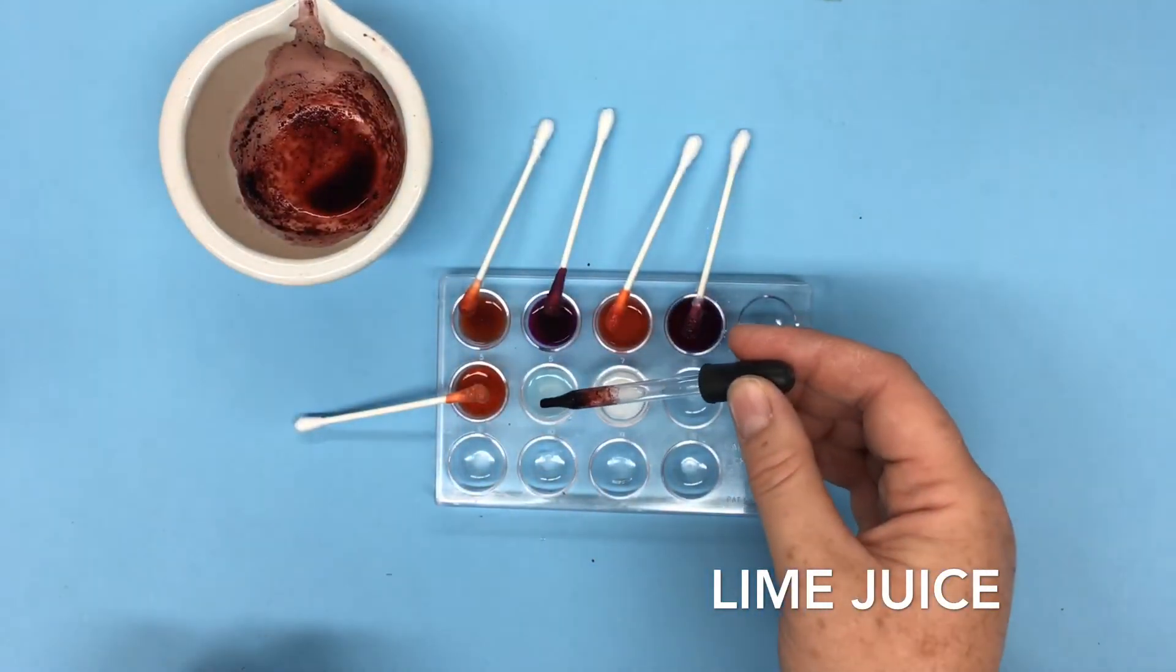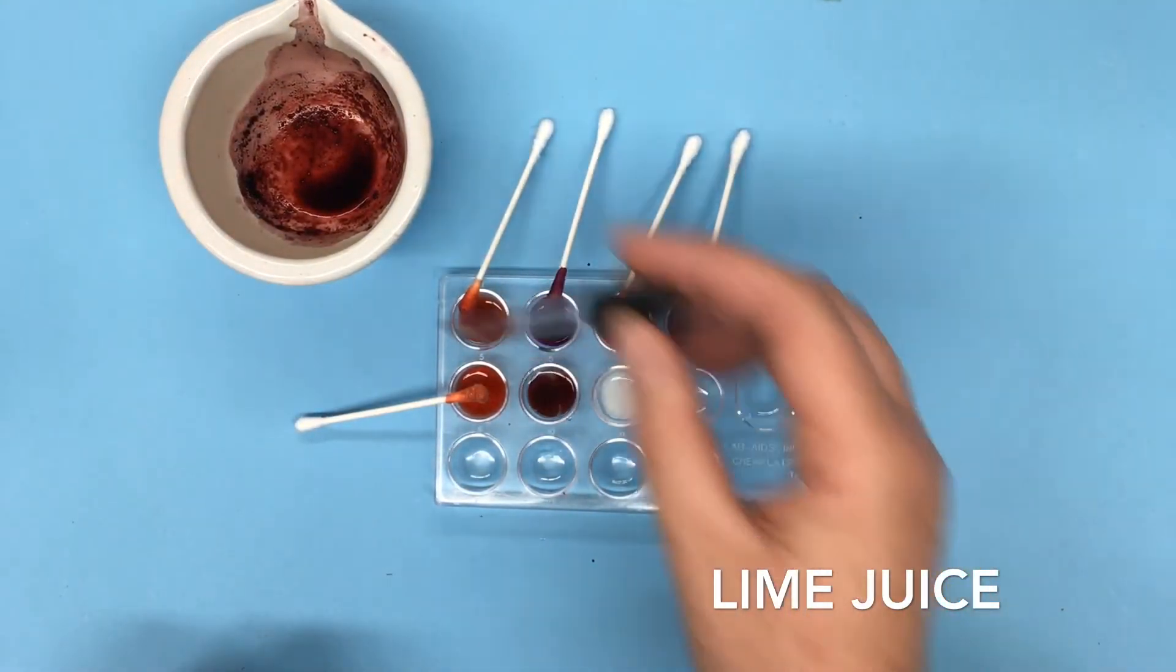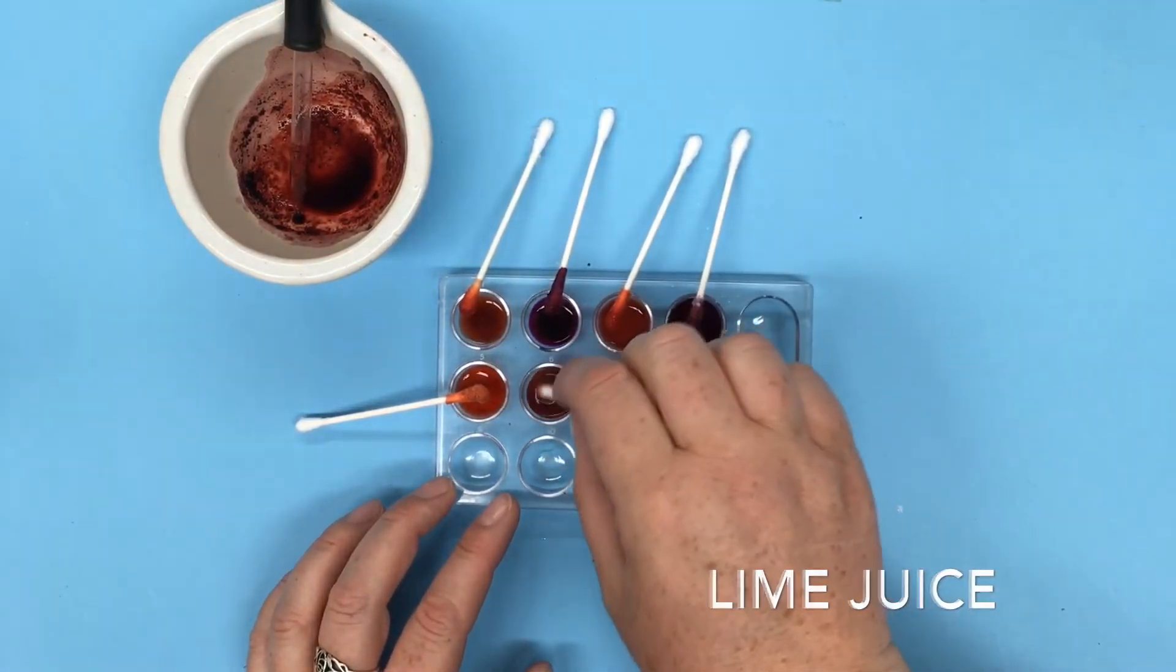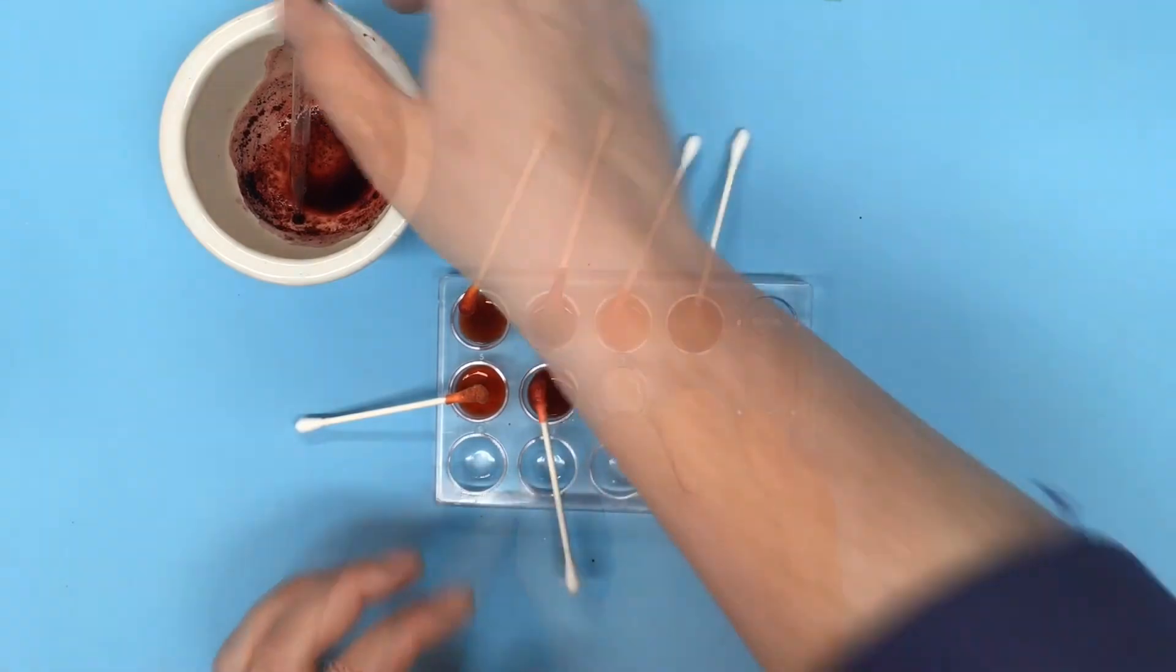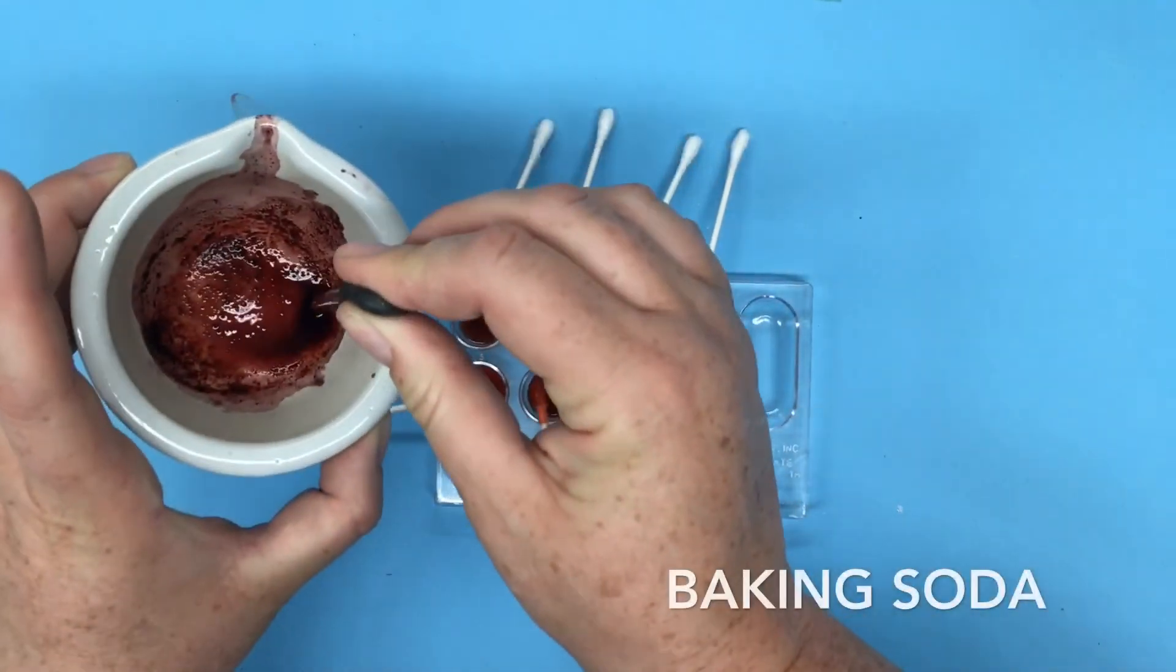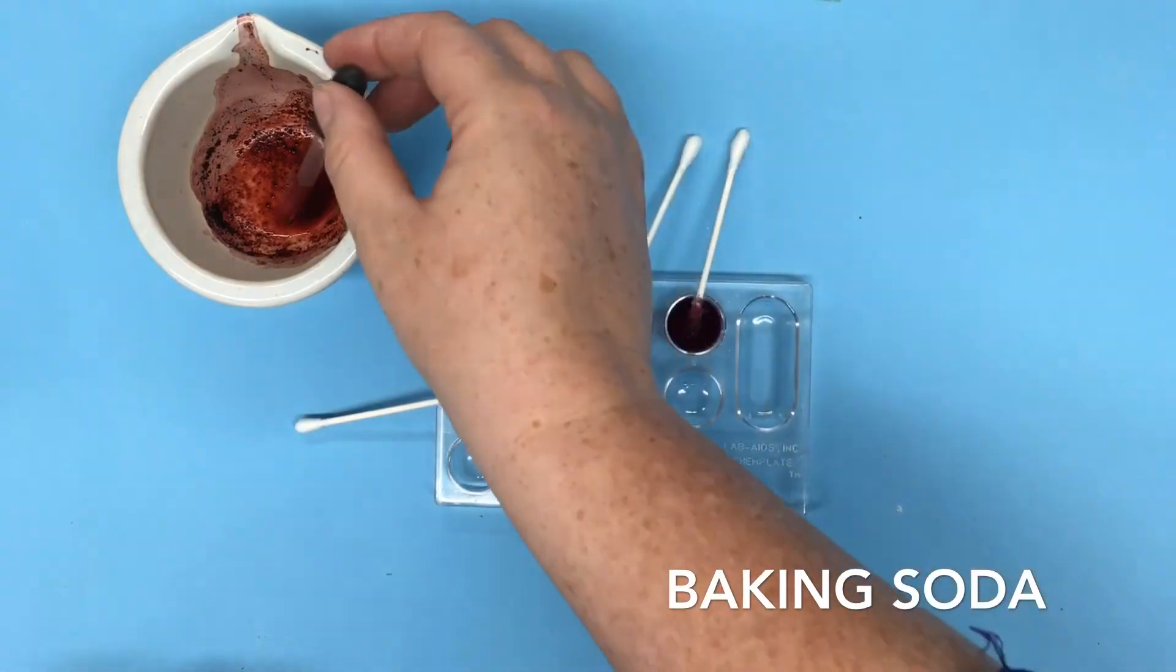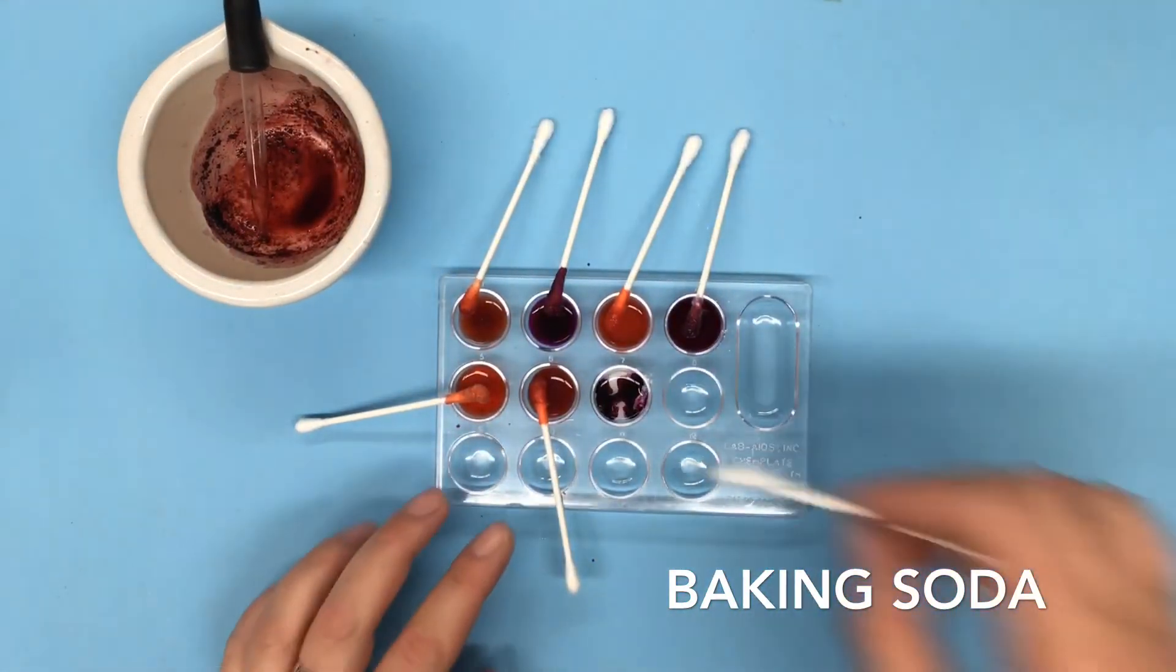Lime juice. Let's see our lime juice is an orangey red color and finally was our baking soda here. Our baking soda is giving us those deep purple tones again.